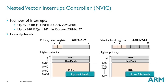As far as the nested vector interrupt controller is concerned, Cortex-M0 and M0+ support up to 32 interrupts plus a non-maskable interrupt, while Cortex-M3, M4, and M7 can support up to 240 interrupt sources plus the non-maskable interrupt. In terms of interrupt priority levels, the Cortex-M0 and M0+ are based on the ARMv6-M architecture and can have up to four levels of programmable priority. The Cortex-M3, M4, and M7 are based on the ARMv7-M architecture and can have anywhere from eight up to 256 levels of interrupt priority.